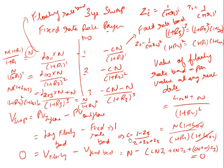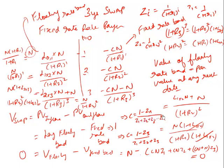More generally, for an n-year swap the fixed rate is c = (1 − zₙ) / (z₁ + z₂ + … + zₙ), where the sum runs over all discount factors to each payment date.